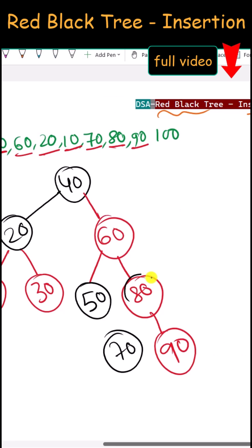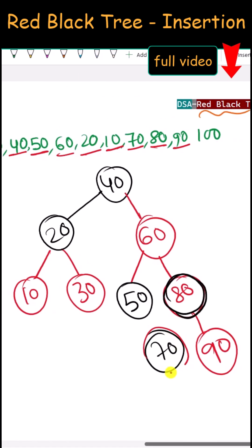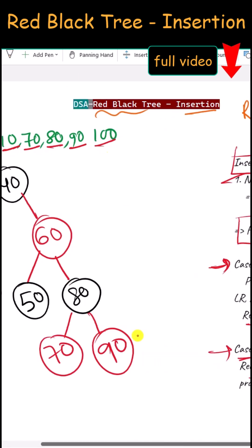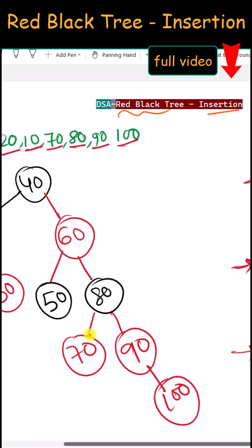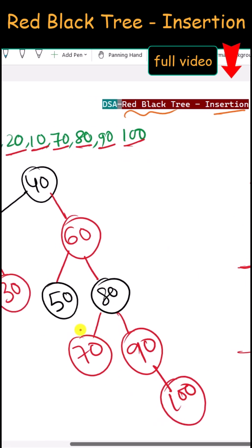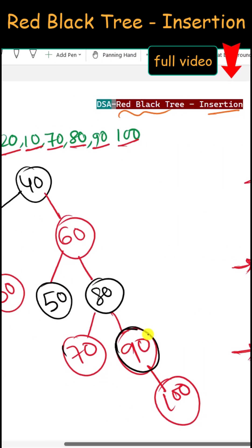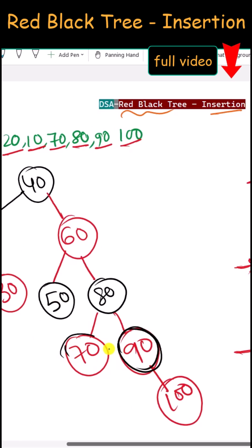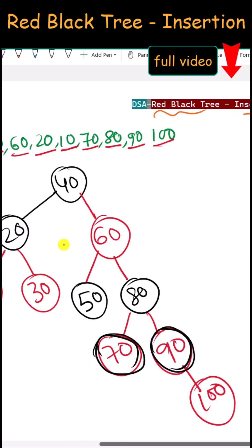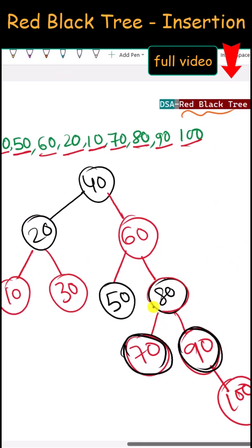90 is inserted here and there is no uncle, so we perform a left rotation. Now 80 becomes black and 70 becomes red. Next, 100 is inserted here.